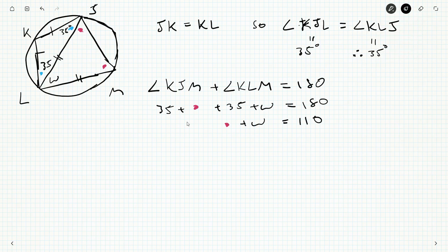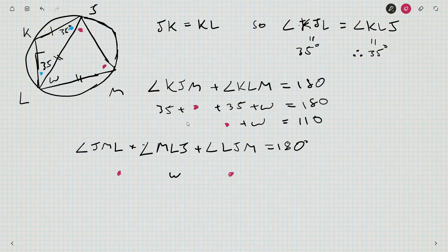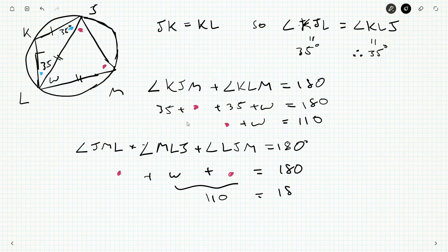But I also know that triangle JML, so angle JML plus angle MLJ plus angle LJM equals 180 degrees. That's w plus two of these dots equals 180 degrees, but that's 110. So 110 minus 70 equals w, which means w equals 40 degrees.